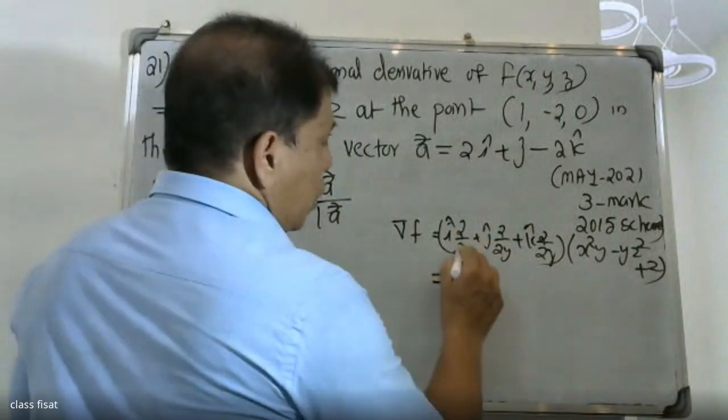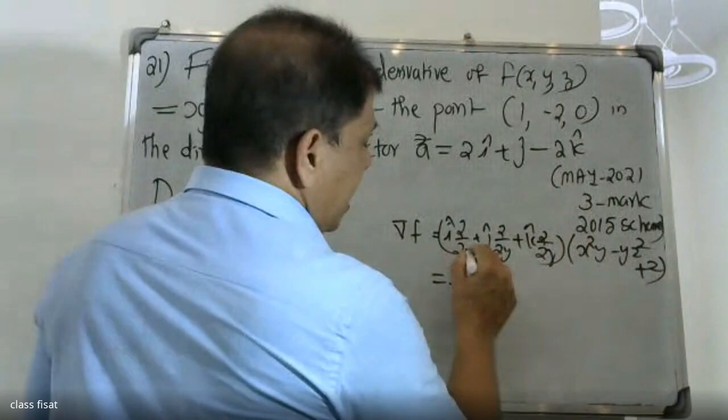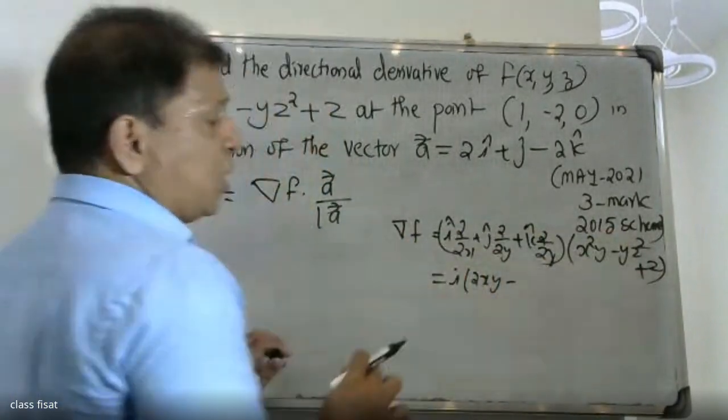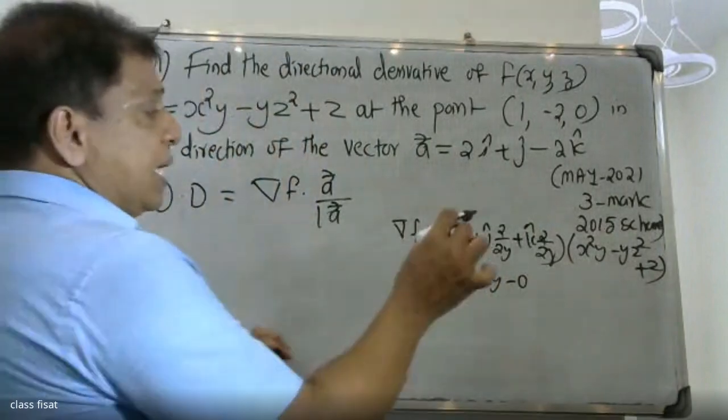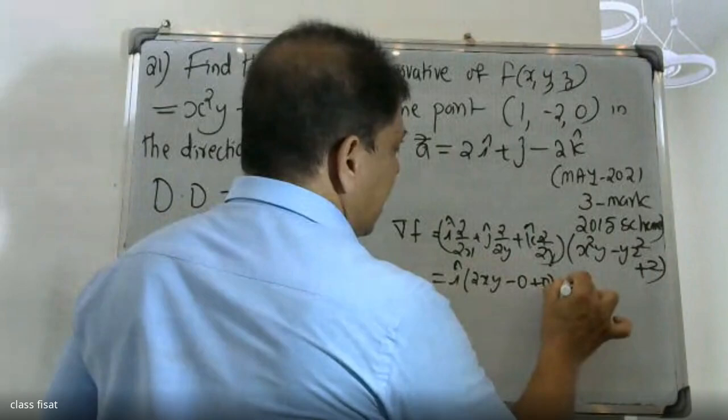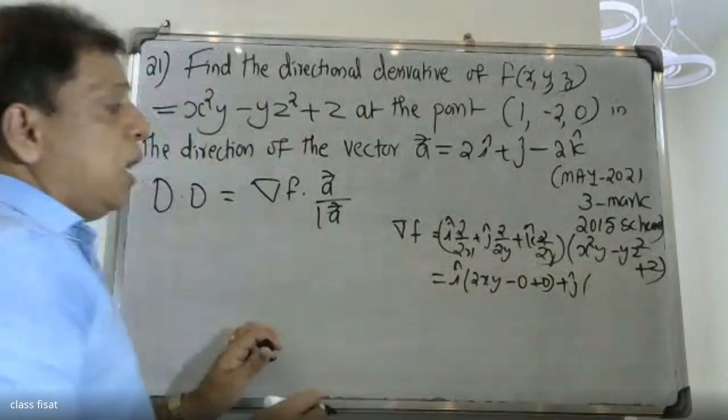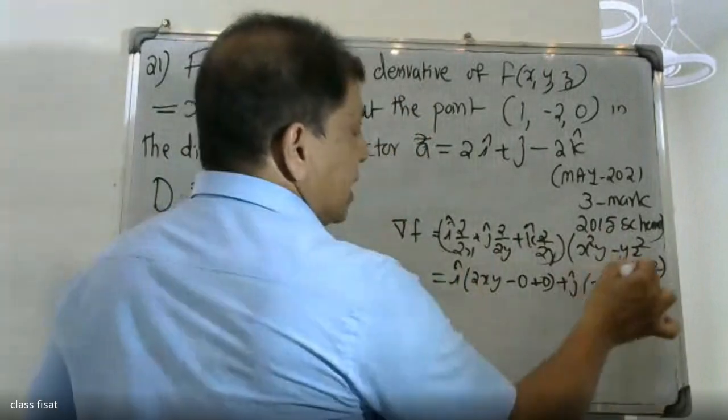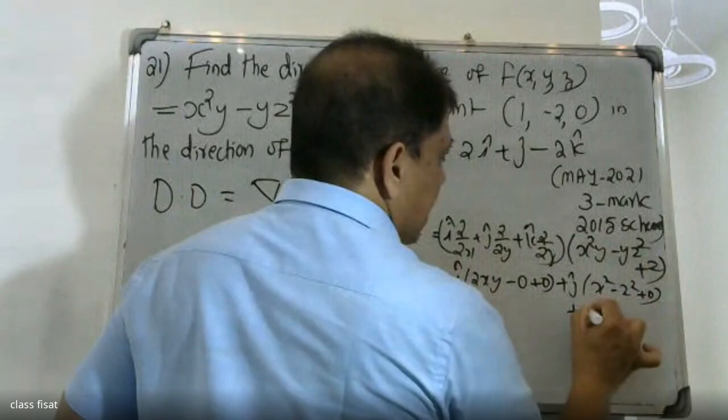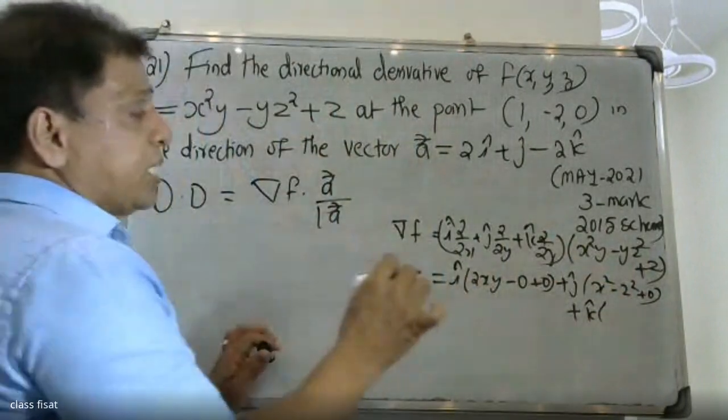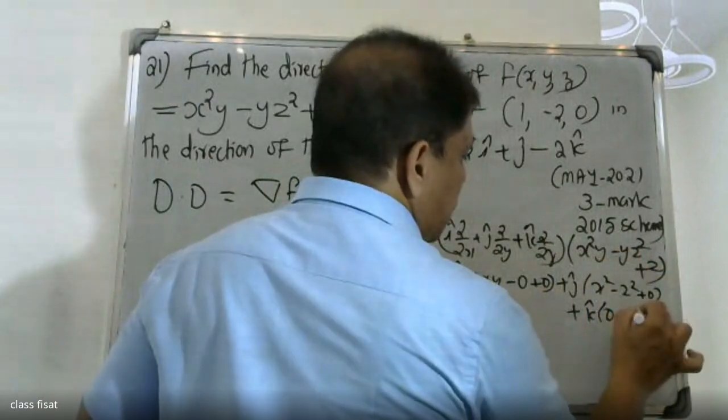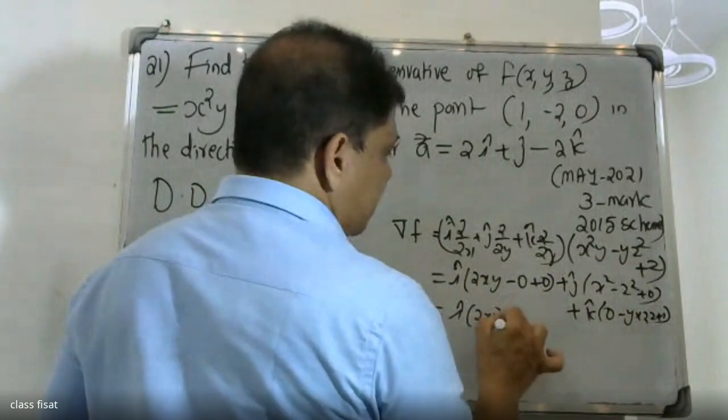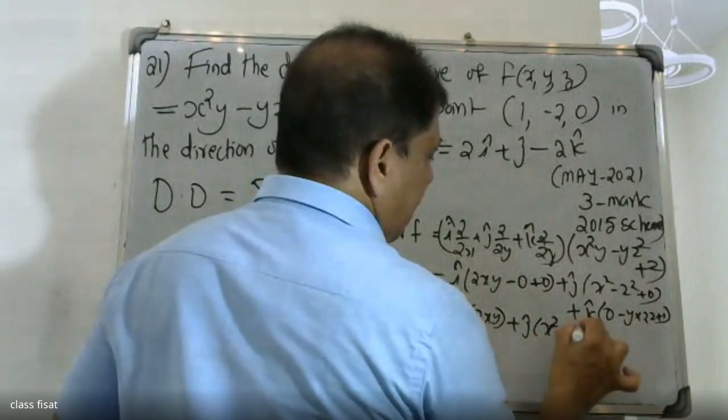i ∂/∂x: partial differentiating gives 2xy. For j ∂/∂y: x²y - yz² gives x² - z². Plus k ∂/∂z: we get -y(2z) + 1. So the answer is i(2xy) + j(x² - z²) + k(1 - 2yz).